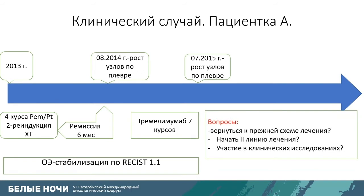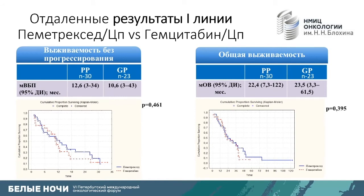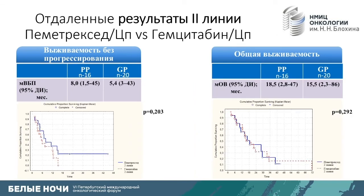The same questions reappeared: return to previous treatment, repeat first line, start second line, or participate in another clinical trial? In 2015, a publication showed that tremelimumab did not extend survival compared to other chemotherapy modes. Gemcitabine with cisplatin was considered as treatment, though no direct comparison between the two schemes had been made. In our center, we compared the efficiency of gemcitabine/cisplatin versus pemetrexed/cisplatin in first and second lines for pleural mesothelioma. Survival without progression and overall survival were comparable; the difference was statistically insignificant.